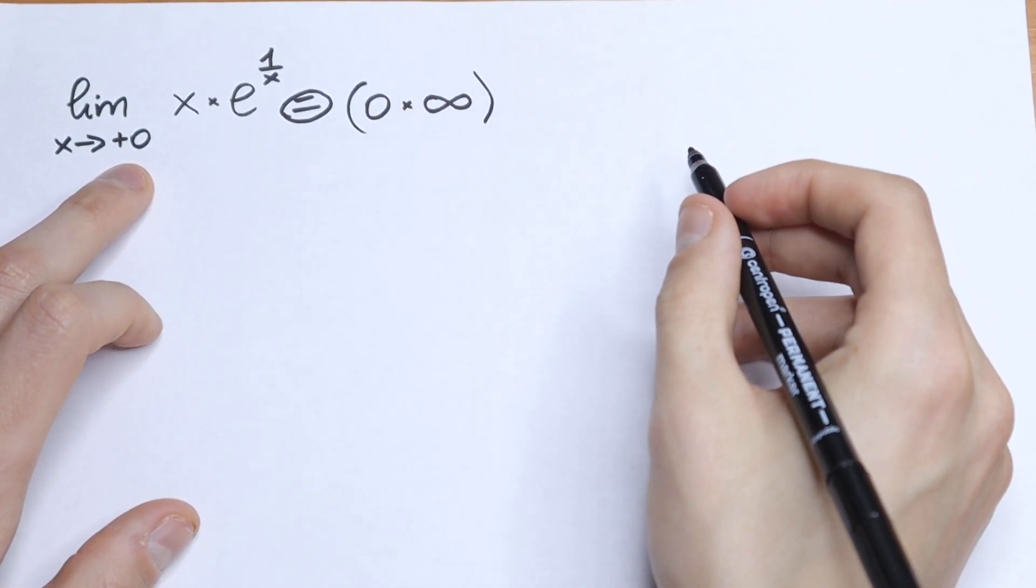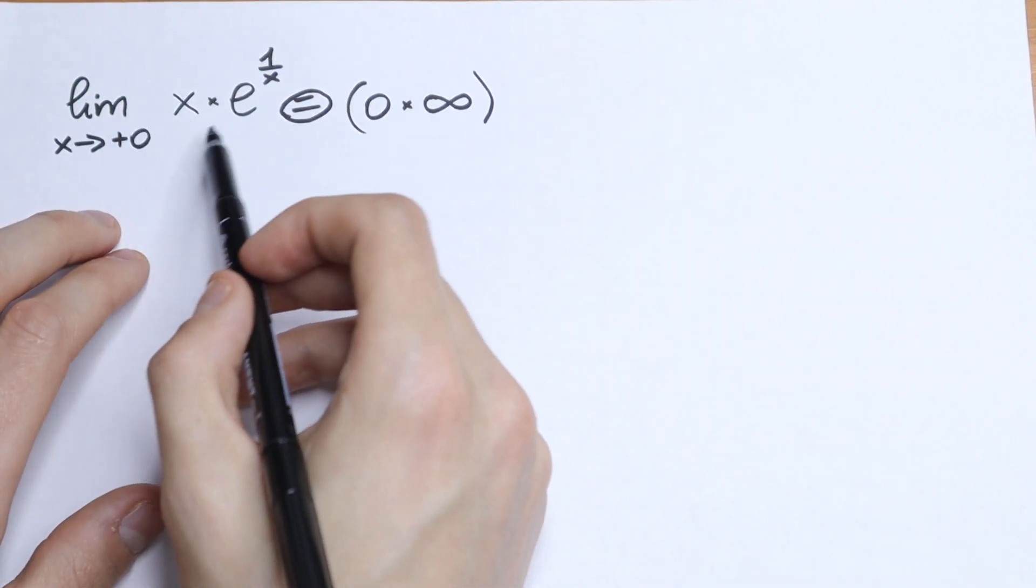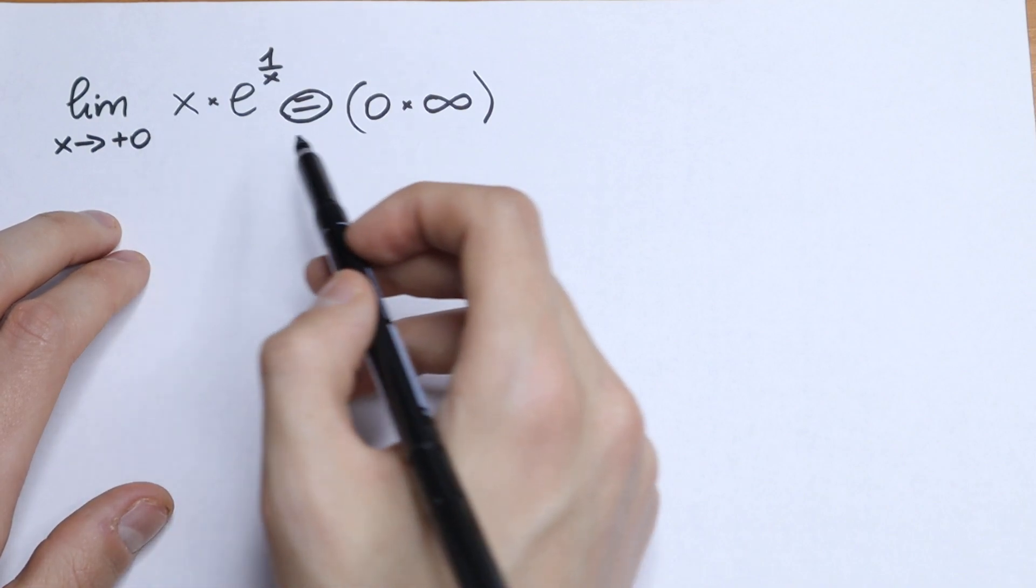0 times infinity is undefined, so we don't know what the value represents. And we need to simplify this expression right here.